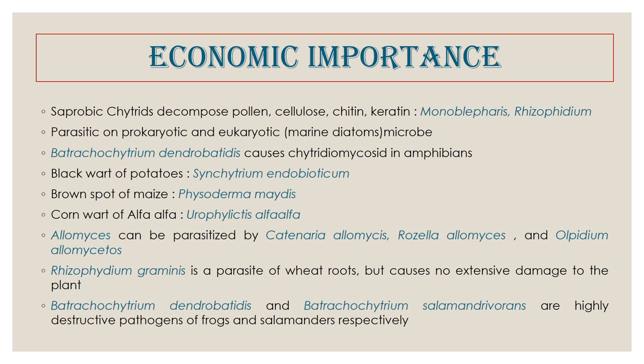Regarding economic importance: when we study fungi we describe them as either harmful or beneficial. Most Chytridiomycetes fungi are saprobic, meaning they decompose organic matter — for example, pollen, cellulose in cell walls of dead wood, dead leaf litter. They decompose cellulose, chitin, and keratin, breaking down complex matter into simple forms, thereby helping in nutrient cycling by releasing nutrients into the soil for use by plants.